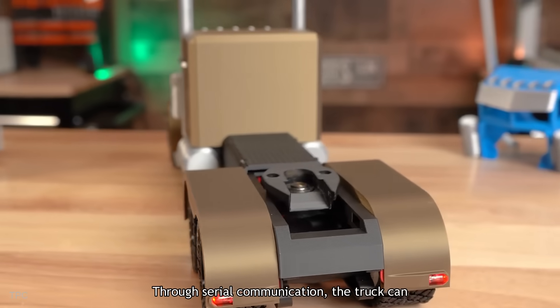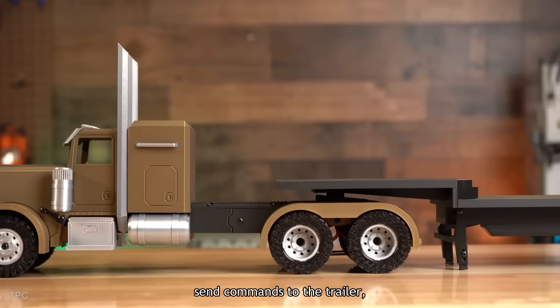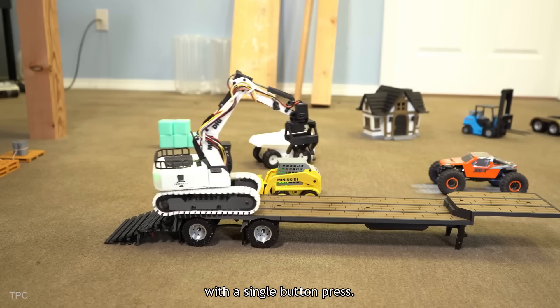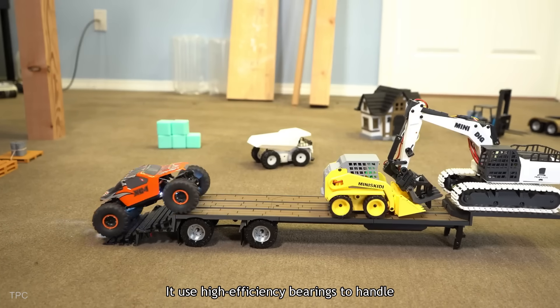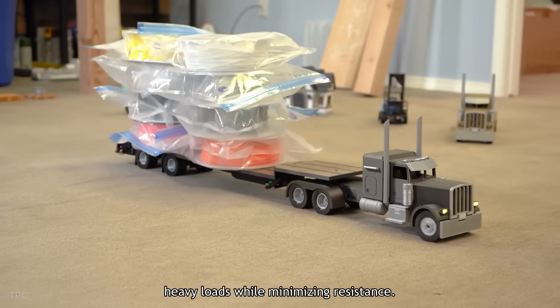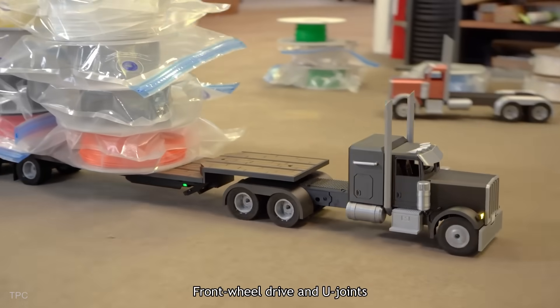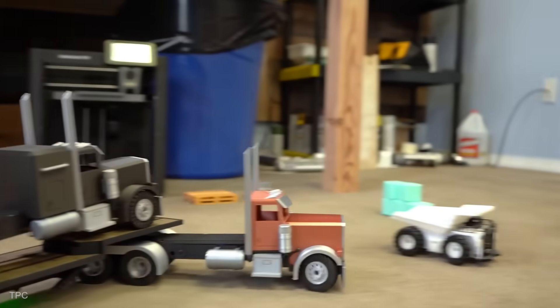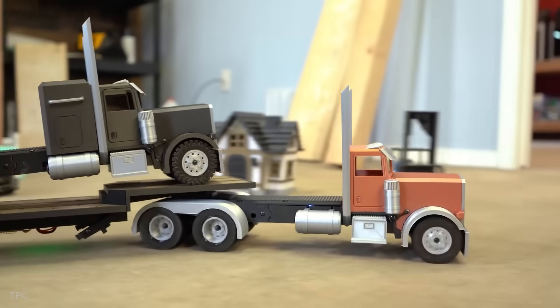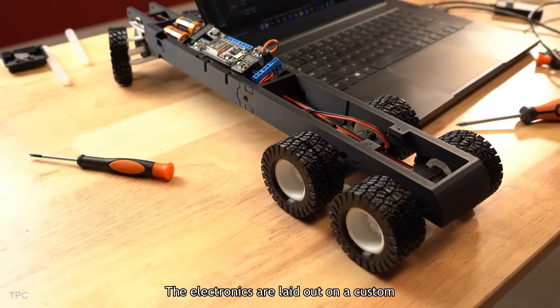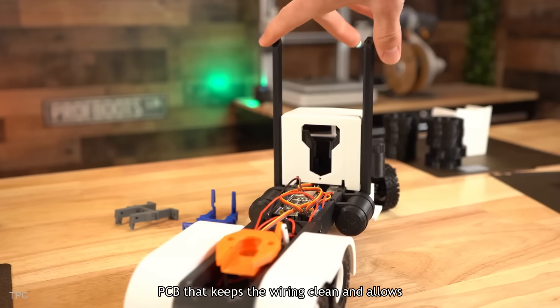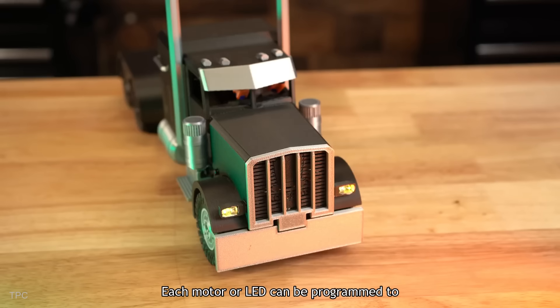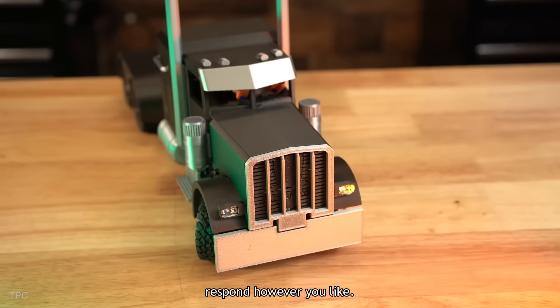Through serial communication, the truck can send commands to the trailer, like raising landing legs or lowering a ramp, with a single button press. The electronics use high-efficiency bearings to handle heavy loads while minimizing resistance. Front-wheel drive and U-joints add off-road capability and better control. The electronics are laid out on a custom PCB that keeps the wiring clean and allows full customization. Each motor or LED can be programmed to respond however you like.